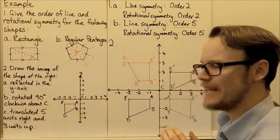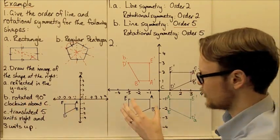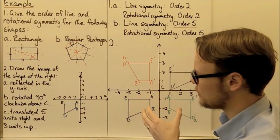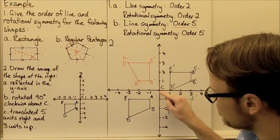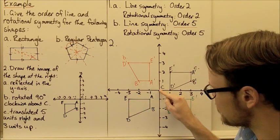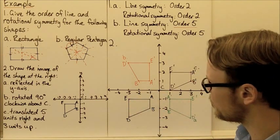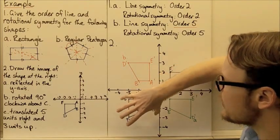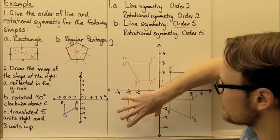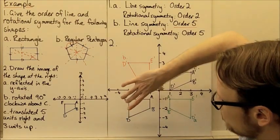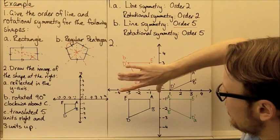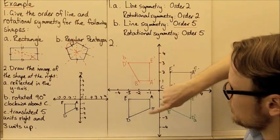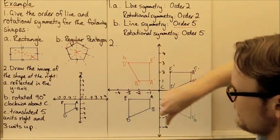If we're looking at rotating our shape through 90 degrees clockwise about C, we've been told that C is our centre point. Rotating clockwise means we're going to rotate our object in the clockwise direction.